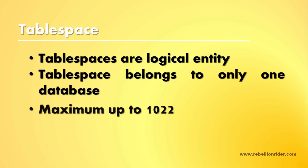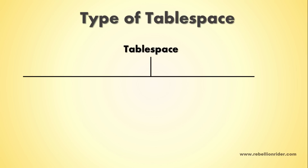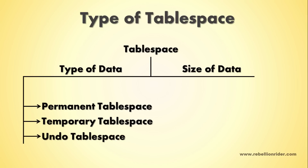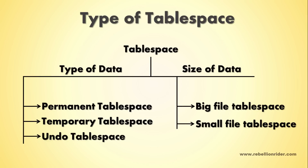One tablespace can have up to 1022 data files, though this number also depends on your OS. Next are the types of tablespaces in Oracle Database. We can differentiate tablespaces on the basis of two factors: type of data and size of data. Type of data consists of three kinds: permanent tablespace, temporary tablespace, and undo tablespace. On the basis of size of data, we have two kinds: big file tablespace and small file tablespace.